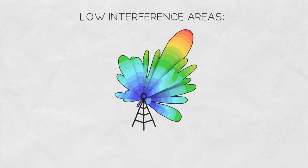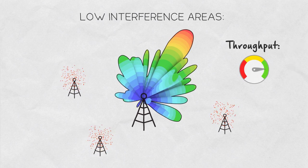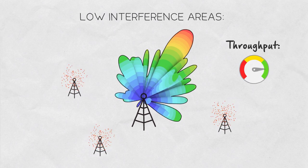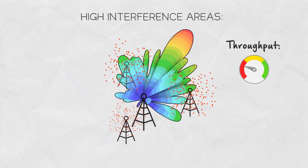In low interference areas, high front-to-back ratio is not so important because there is no interference potentially harming a wireless network in the first place.